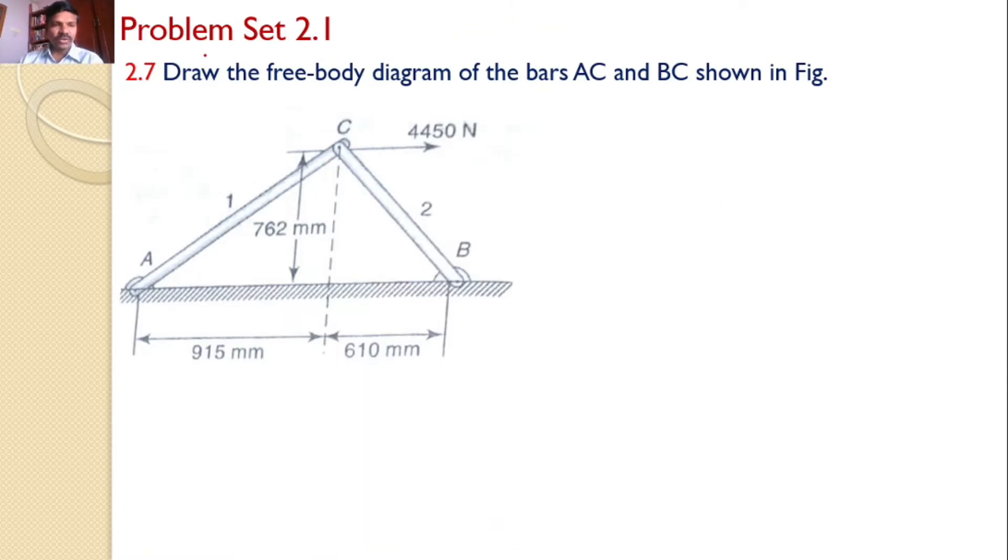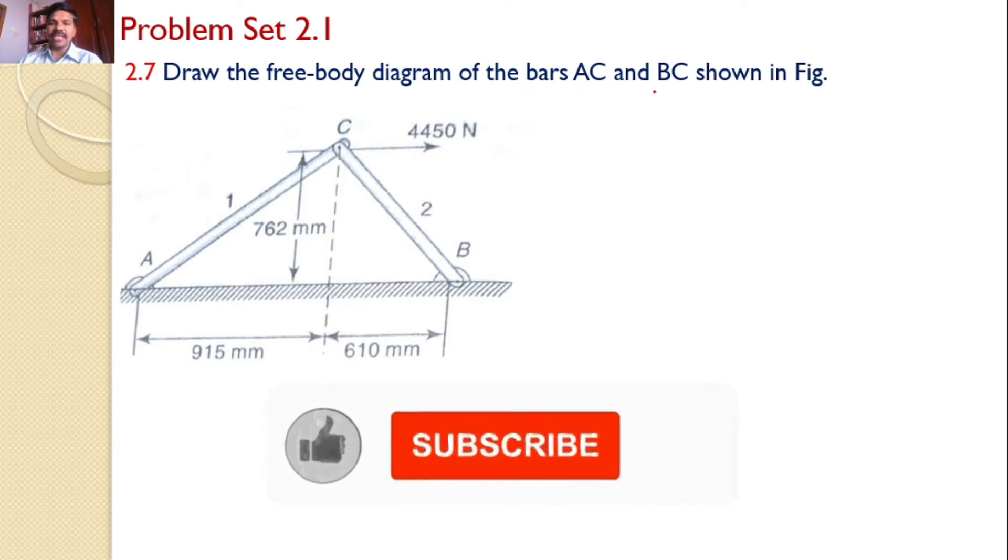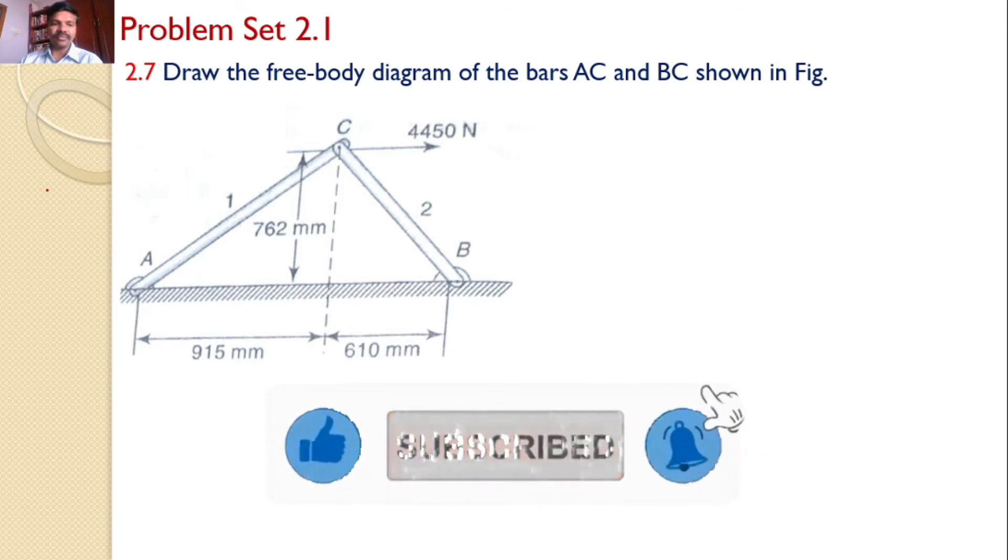In this video we will solve problem set 2.1, problem number 2.7. Draw the free body diagram of the bars AC and BC shown in the video. Our interest is to find only the free body diagrams of AC and BC.